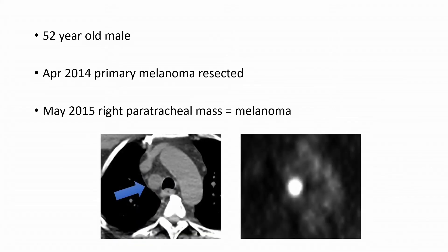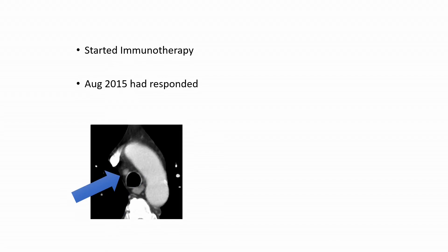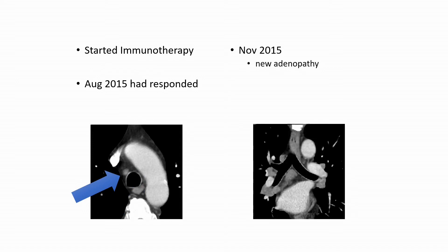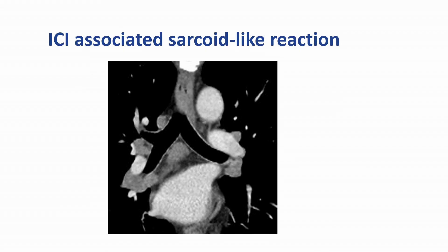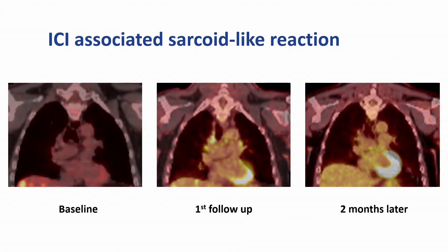This patient had melanoma resected in 2014, and a year later came back with a paratracheal mass — FDG-avid, biopsied, confirmed as melanoma. He was started on checkpoint inhibitor and a few months later had responded. A few months after that he came back with bilateral hilar and subcarinal adenopathy, which at first glance looked concerning. This was biopsied and came back as reactive — the patient was diagnosed with an immunotherapy-associated sarcoid-like reaction. You can see bilateral hilar and subcarinal symmetrical adenopathy, sometimes also visible on PET with bilateral symmetrical moderate uptake. If you see this pattern with disease going well elsewhere, don't jump to calling it progressive disease.